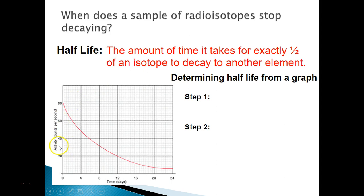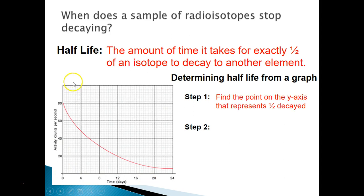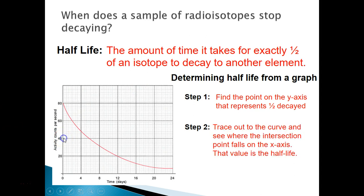Looking at this graph, the y-axis shows activity (counts per second), representing the amount of substance remaining, and the x-axis shows time. At time zero, we have an amount of 80. Half of 80 is 40, so we trace a line from 40 out to the curve and down to the x-axis. That intersection falls just about between 4 and 8, so the half-life is approximately 6 days.